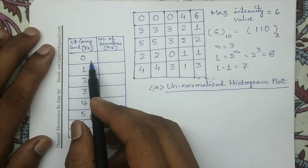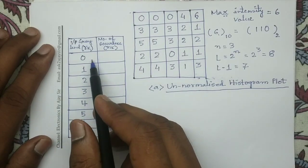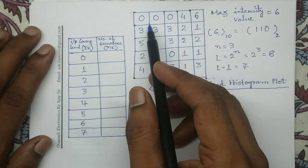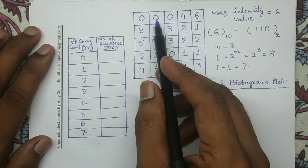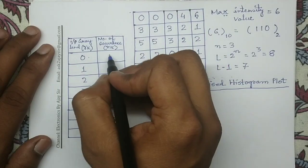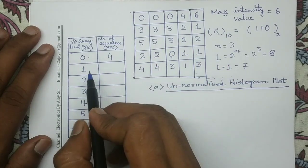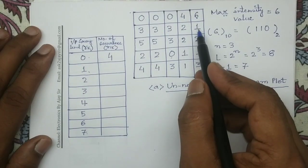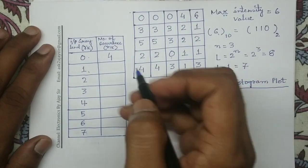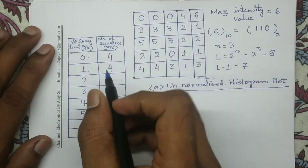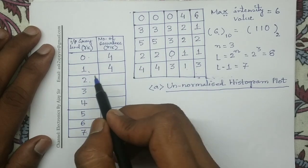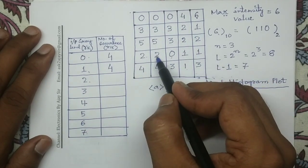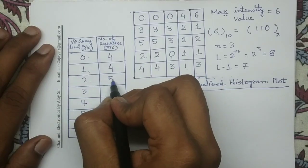Now we will count the number of occurrence of each gray level. For input gray level equals to 0, its corresponding number of occurrence is 4. For input gray level equals to 1, its corresponding number of occurrence is 4. For input gray level equals to 2, the corresponding number of occurrence is 5.